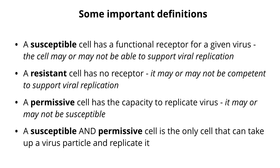A permissive cell has the capacity to replicate a virus. If you put the nucleic acid of the virus inside of it, that nucleic acid will initiate an infectious cycle. So permissive is separate from susceptible — susceptible has to do with the receptor, permissive refers to what is going on inside the cell. A cell that can actually be infected and produce more virus particles would be both susceptible and permissive.